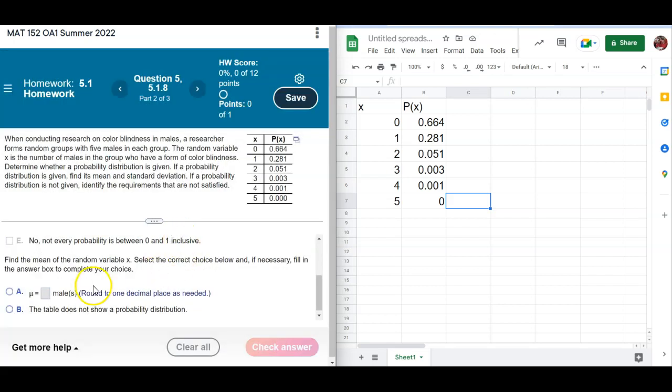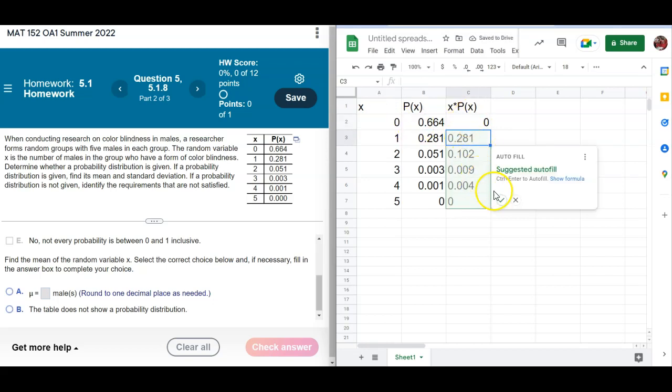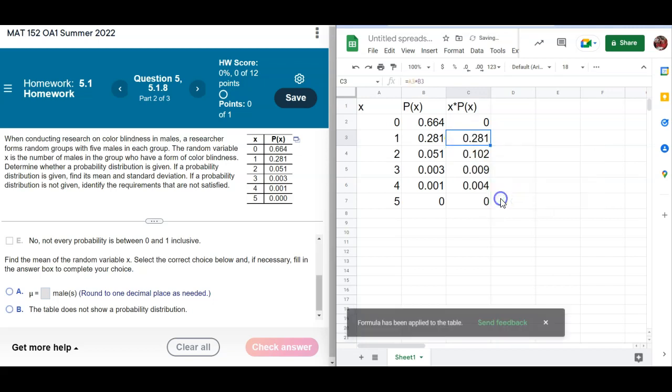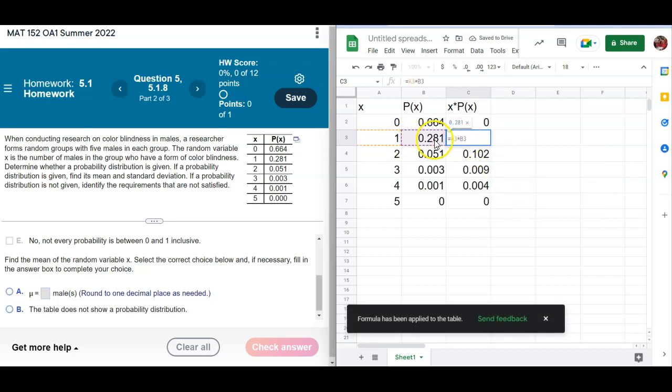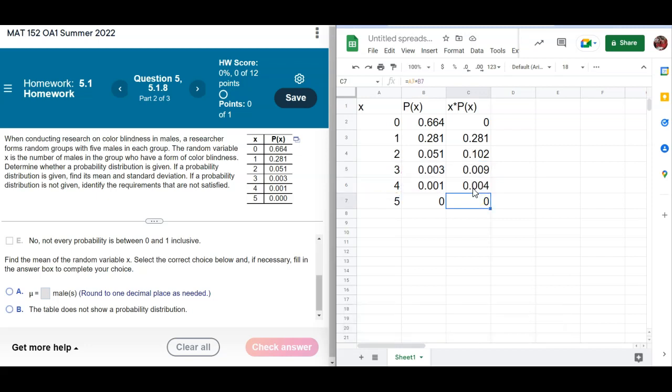The second part wants to know what's the mean of this distribution. So what we need to be able to do that is to multiply x times the probability. In this cell, I'm going to multiply this times this. It's going to suggest that I do it all the way down. That is correct. So I'm going to accept it. Just notice it is multiplying the things in column A and column B together all the way down. So that is what I needed to do.